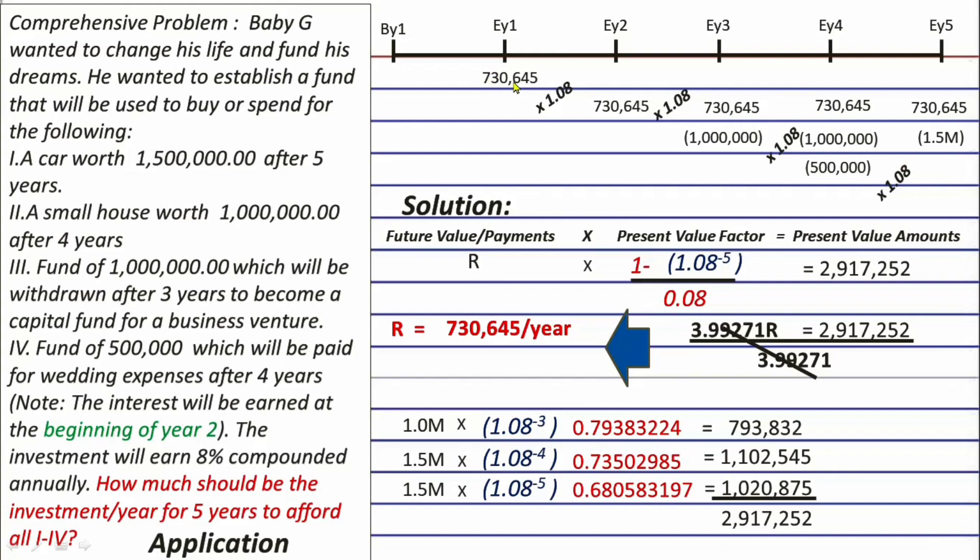We have 730,645 times 1.08 equals 789,097 plus another 730,645 equals 1,519,742. That's the balance at the end of year 2 times again 1.08 and we will have 1,641,321 plus another 730,645 but minus 1 million because Baby G is to get this amount already to make it a capital for his business. We will have 1,371,966 as the balance for the end of year 3.